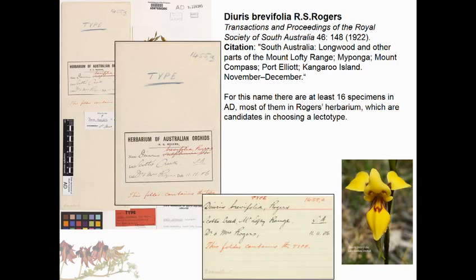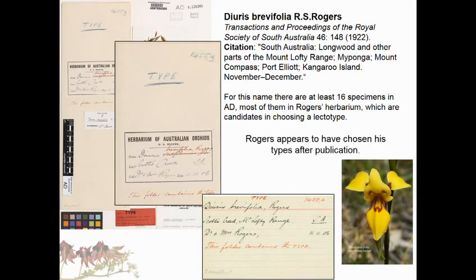The problem is that all of Rogers' annotations must have been done after he published the names, because he never nominated types in any of his publications. In fact, all his new species were published before 1930, so he didn't have to - which raises interesting questions about the status of his orchid types.